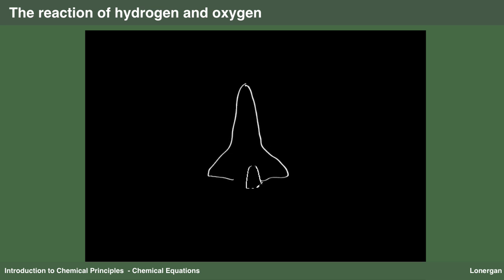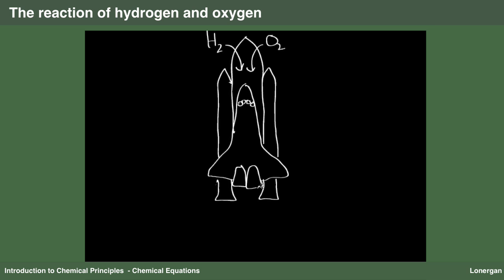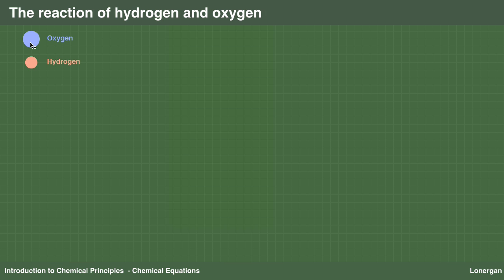Visualizing chemical reactions helps in understanding chemical equations. I start by providing a cartoon representation of the reaction between hydrogen and oxygen. This reaction releases a great deal of energy, so much so that it was used in the space shuttle's main engine. Both hydrogen and oxygen are diatomic molecules. Drawing the oxygen diatomic, and remembering it has a double bond.